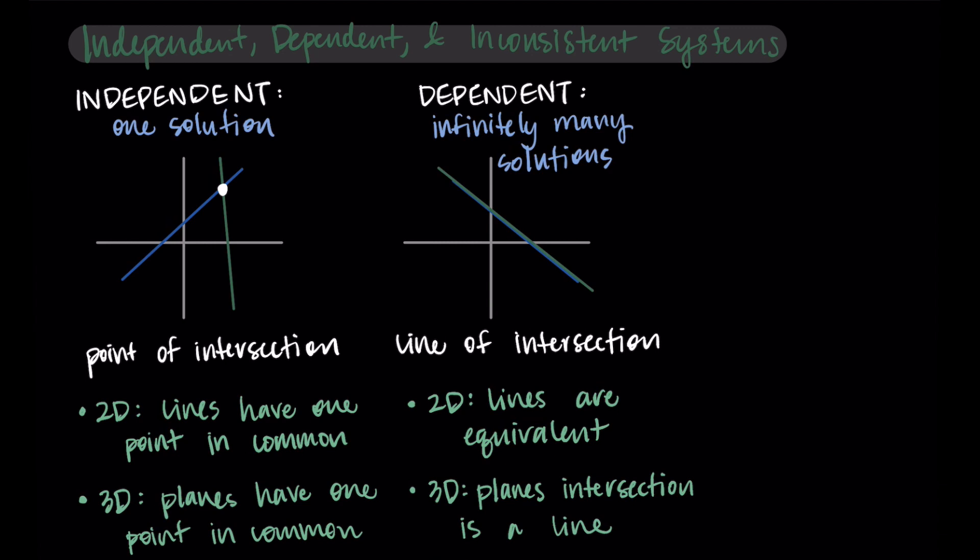For me, a dependent system usually means that I was given one equation that was a multiple of another, or it was just disguised in some way. So it looked different, but we really had a repeating process going on where the system wasn't all that interesting. It was just the same line or the same plane being given twice. Of course, this is going to be a little more complicated in higher dimensions that we can't visualize.